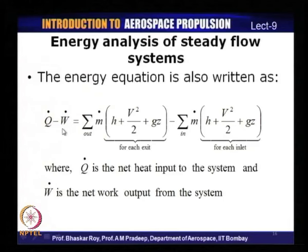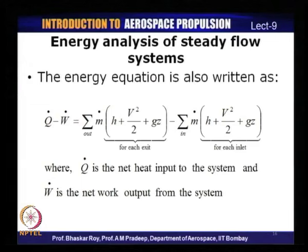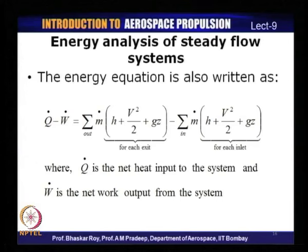This is consistent with our convention from the last lecture — we normally assume heat input into the system and work output from the system. If after calculation these numbers come out negative, it just means the net heat was actually output from the system, or if W comes out negative it means net work was done on the system. We commonly assume net heat input and net work output because most practical systems generate work and require heat input.